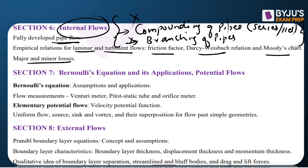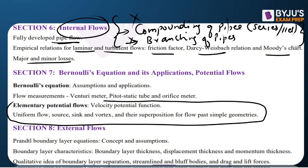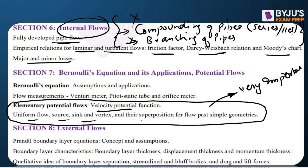Bernoulli equation and its applications are included. Potential flow is very, very important — this is a unique topic not heavily emphasized in civil or mechanical engineering syllabi. It includes velocity potential function, uniform flow, source, sink, vortex, and their superposition for flow past simple geometries. Questions are asked from this area every time. Flow measurement devices — venturimeter, pitot tube, and orifice meter — are also in the syllabus.